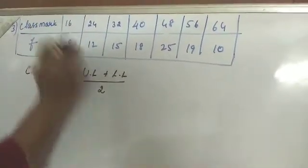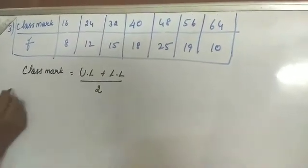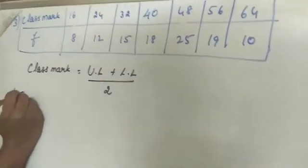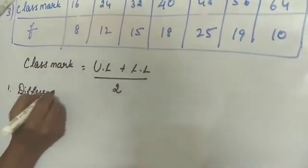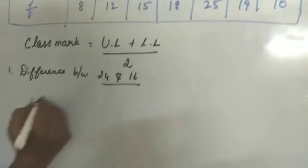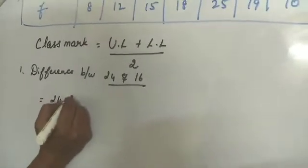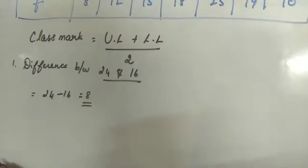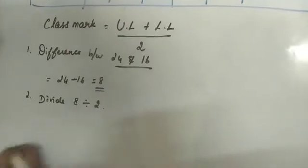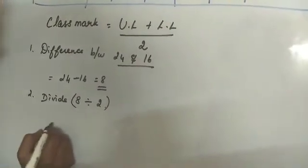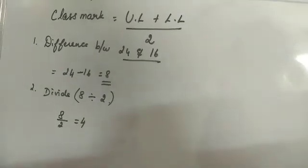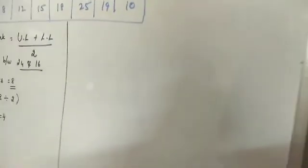Now we got 16, the answer of this. So what you have to do is, first one: find difference between 24 and 16. You will get 24 minus 16 is equal to 8. Second: divide 8 by 2. So you will get 4.